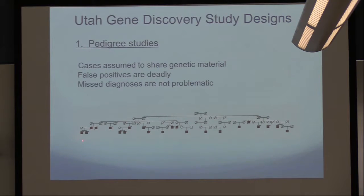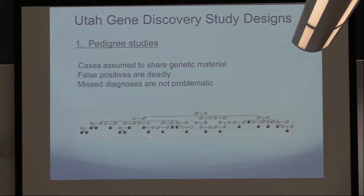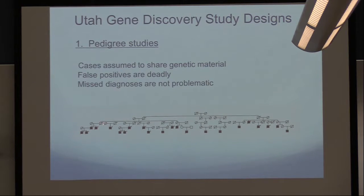We assume that every person we're calling affected shares the same genetic material and we're trying to identify that. If I miss a few diagnoses in a pedigree — say ten more prostate cancer cases — it doesn't affect my ability to do the study. But false positives are completely deadly; they destroy the experiment. If I thought someone had prostate cancer and he didn't, and I compared his genetics to a true case, it could completely destroy the power of the experiment.